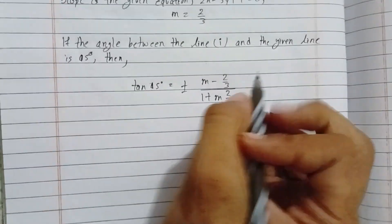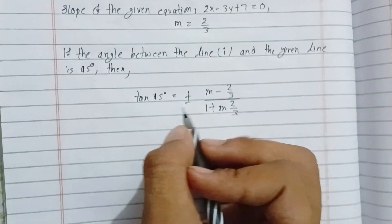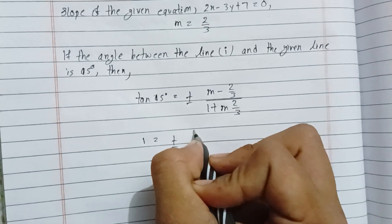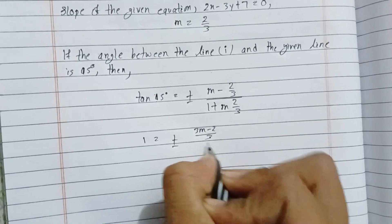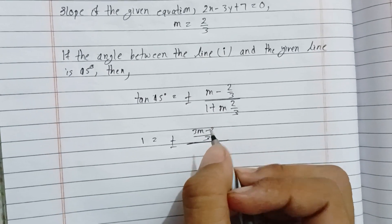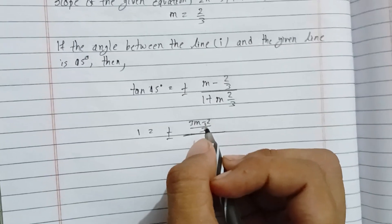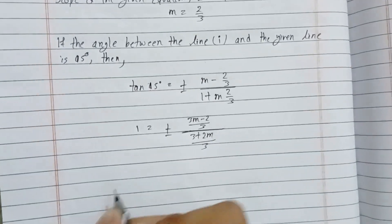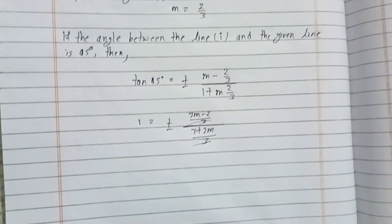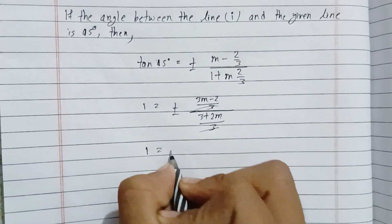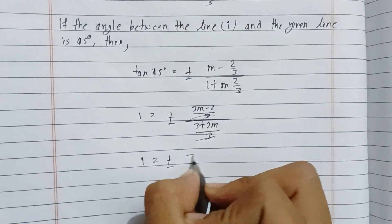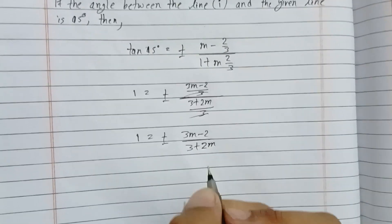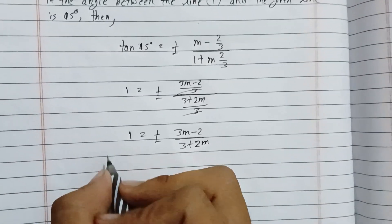Since tan(45°) equals 1, we have: 1 equals plus or minus (3m minus 2) divided by (3 plus 2m). After the 3 cancels, we get 1 equals plus or minus (3m minus 2) divided by (3 plus 2m). Cross multiplying gives 3 plus 2m equals plus or minus (3m minus 2).